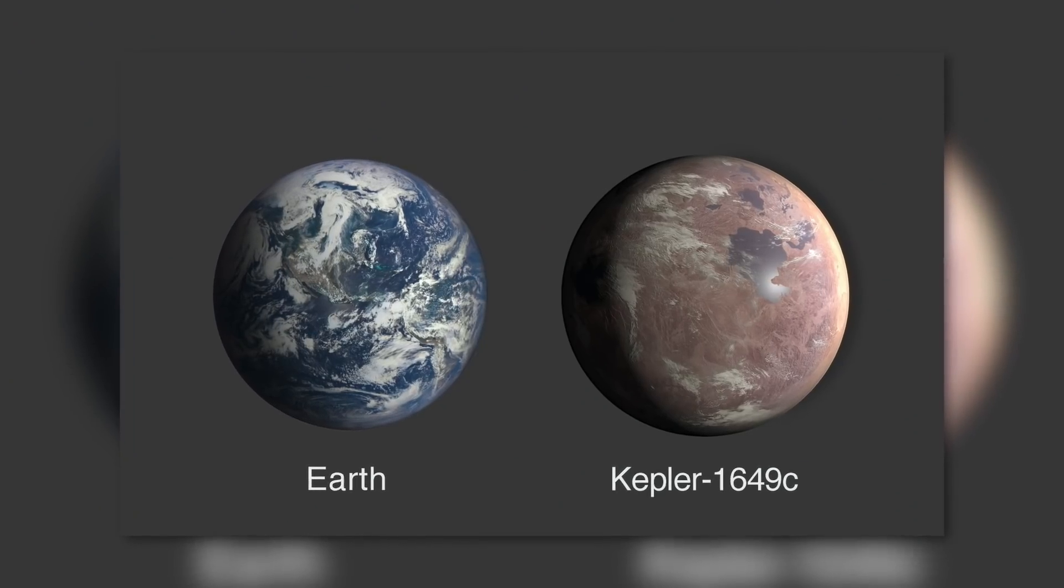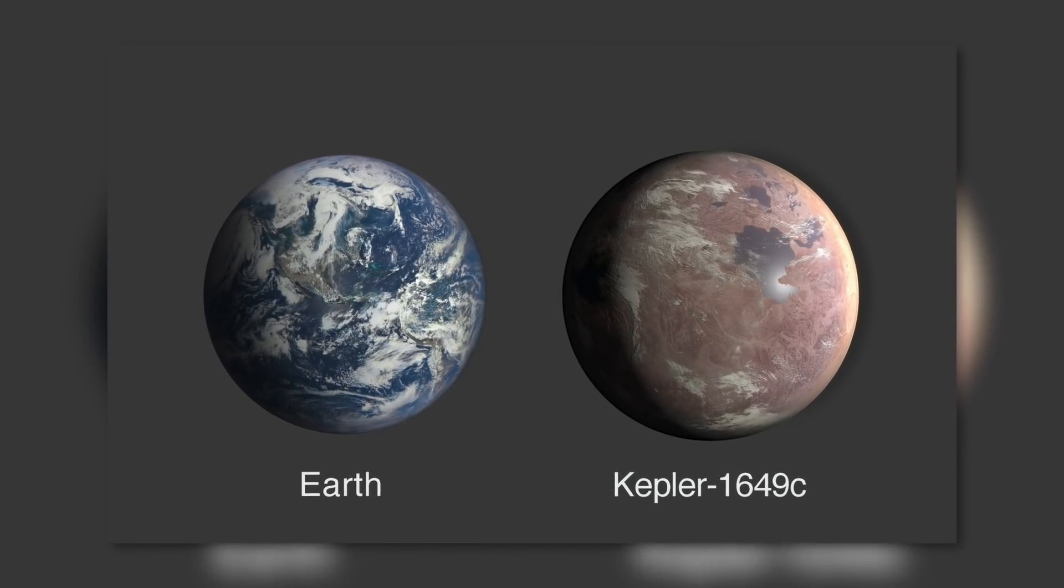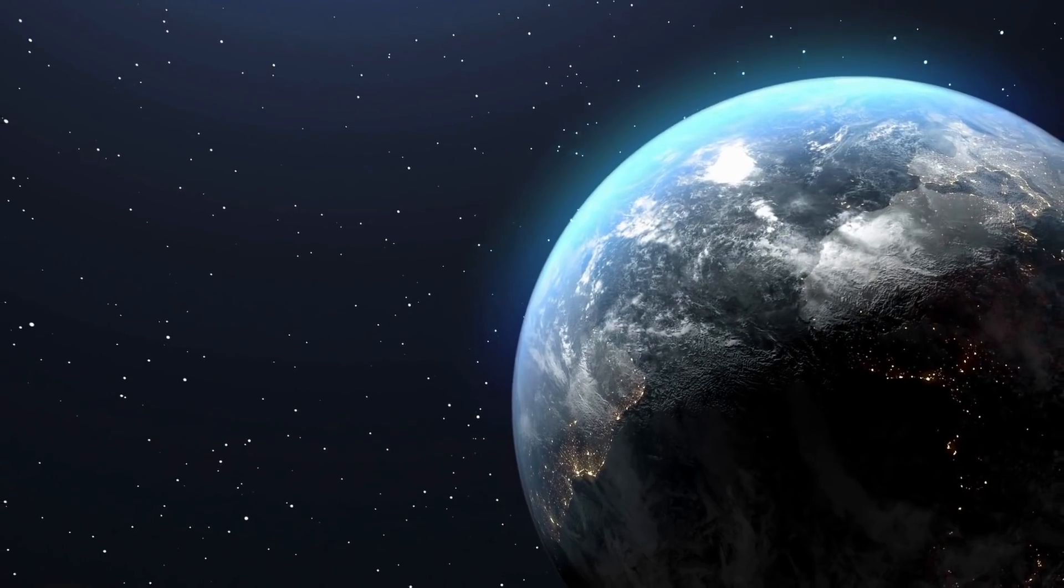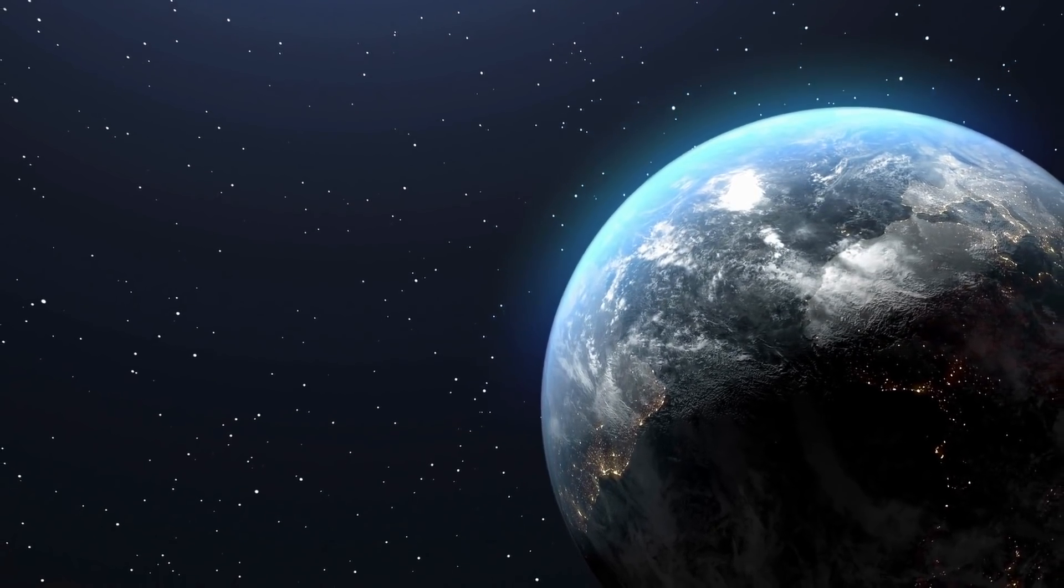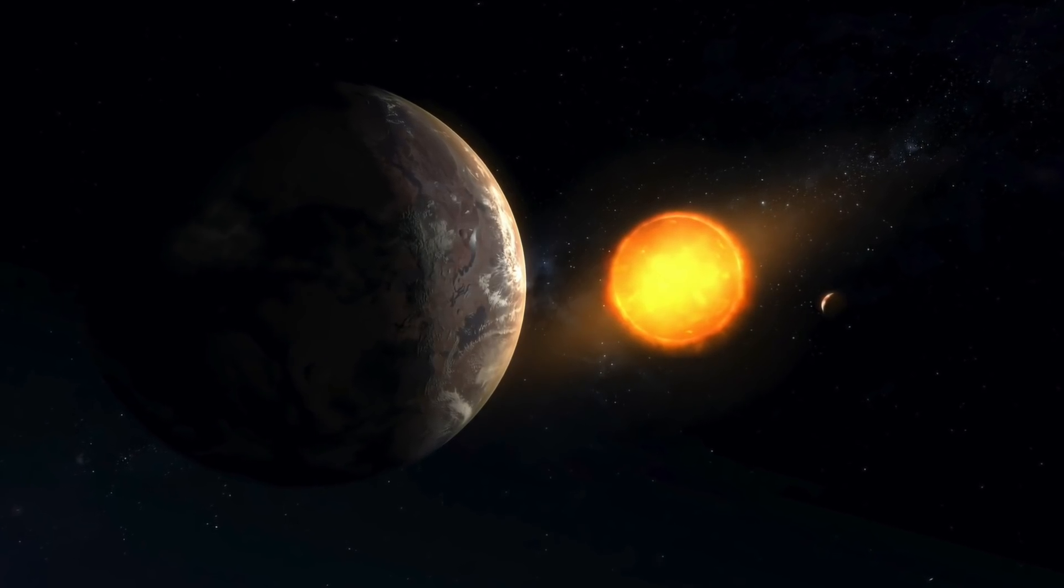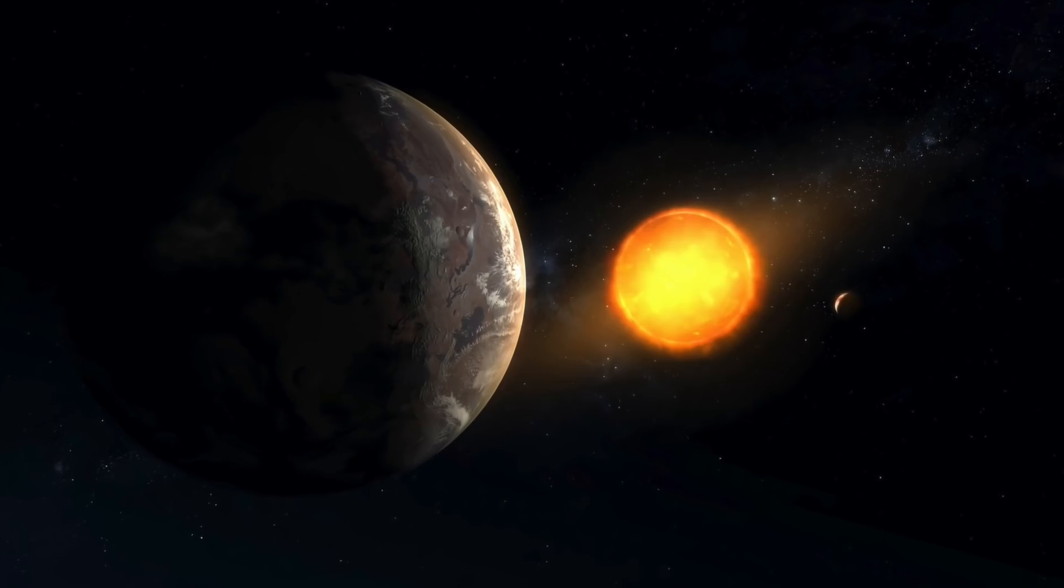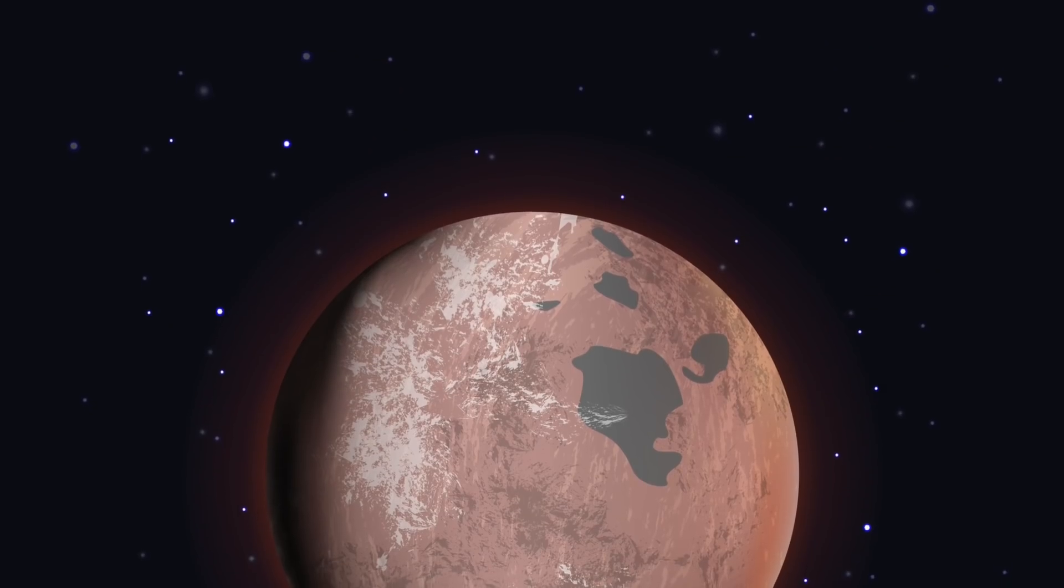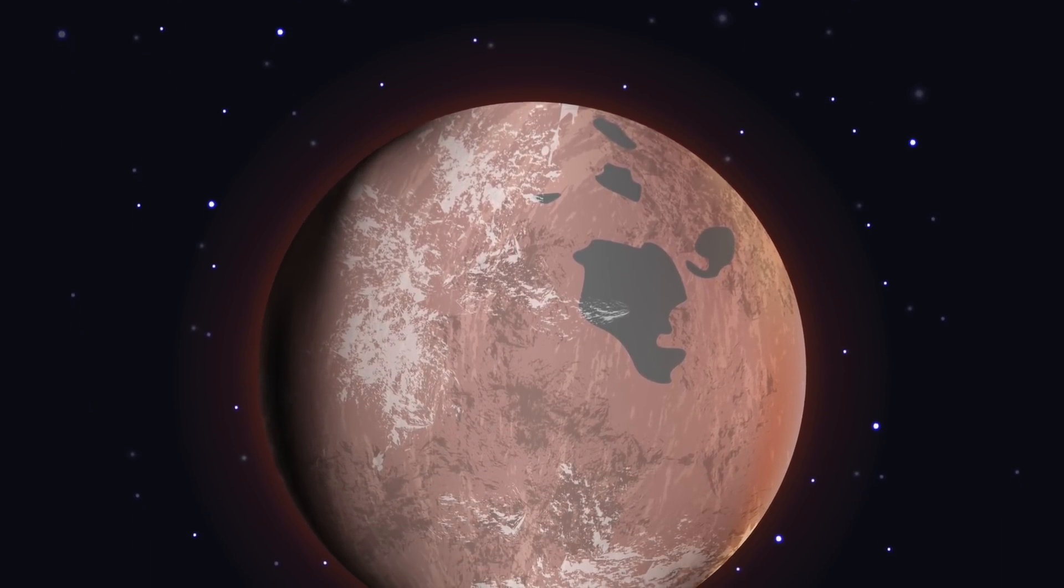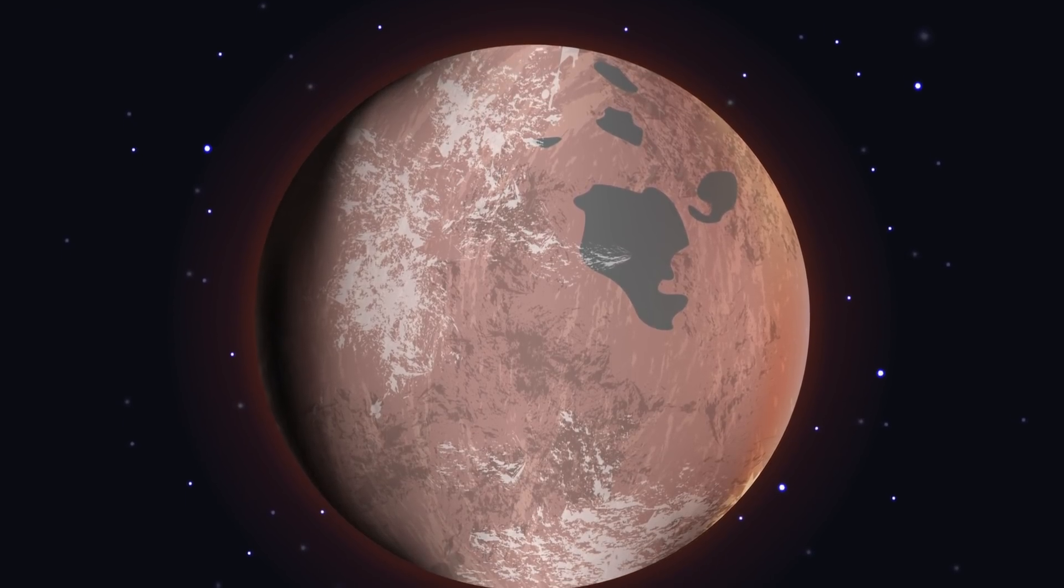In detail, the radius of Kepler 1649c is 1.06 times the radius of the Earth. This means that the exoplanet is almost as large as our home world. The solar radiation, which the extrasolar celestial body receives from its red dwarf, is about 75%. Because of this, the temperatures that prevail on the surface of Kepler 1649c are only minimally colder than on Earth.